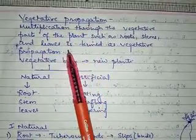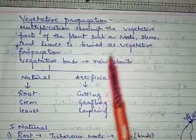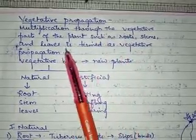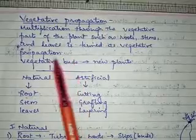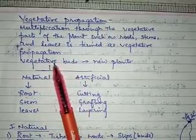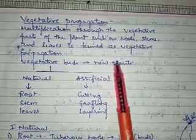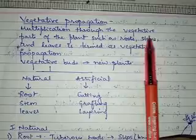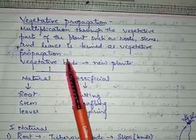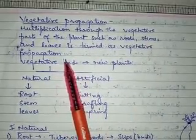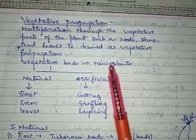These parts involved in vegetative propagation have buds present on them, called vegetative buds. These vegetative buds will give rise to a new plant. For example, if a stem contains a vegetative bud, a new plant can be produced from that bud.